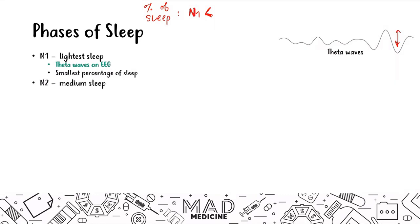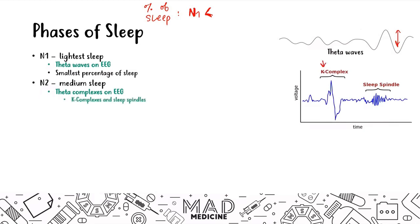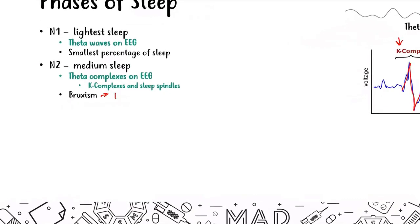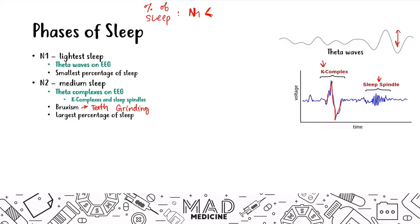After N1 you have N2, which is medium sleep. In N2 you have theta complexes on the EEG which look like this. The theta complexes have two main characteristics: the K complex and sleep spindles. N2 is also where you end up grinding your teeth, aka bruxism. This is the largest percentage of sleep.